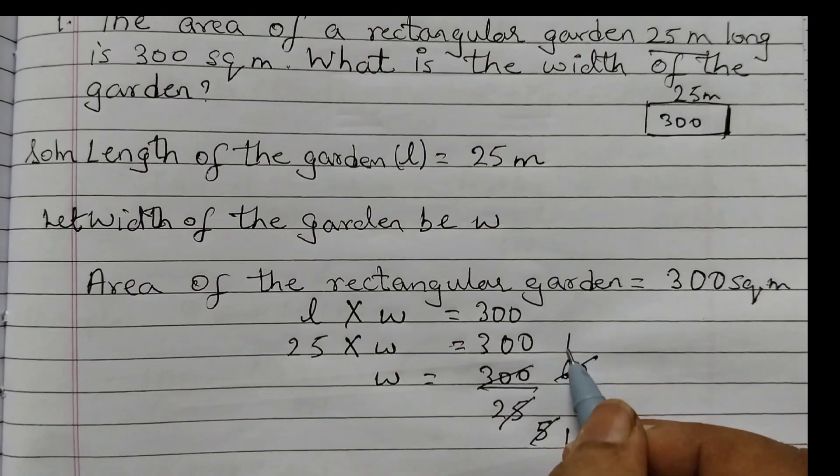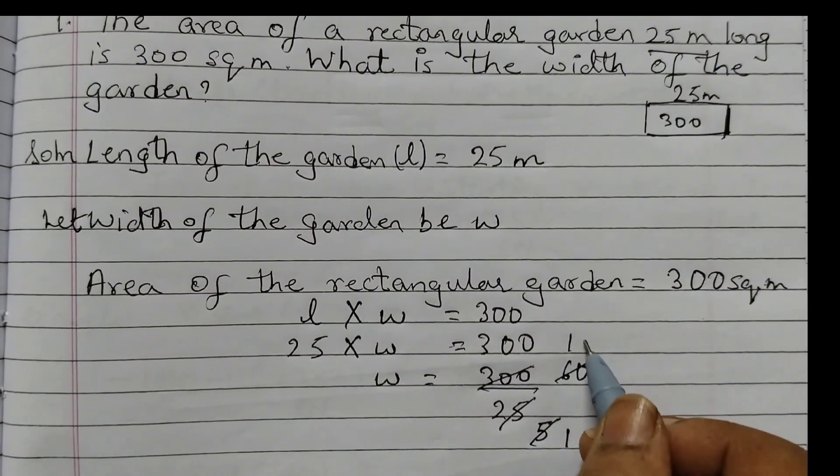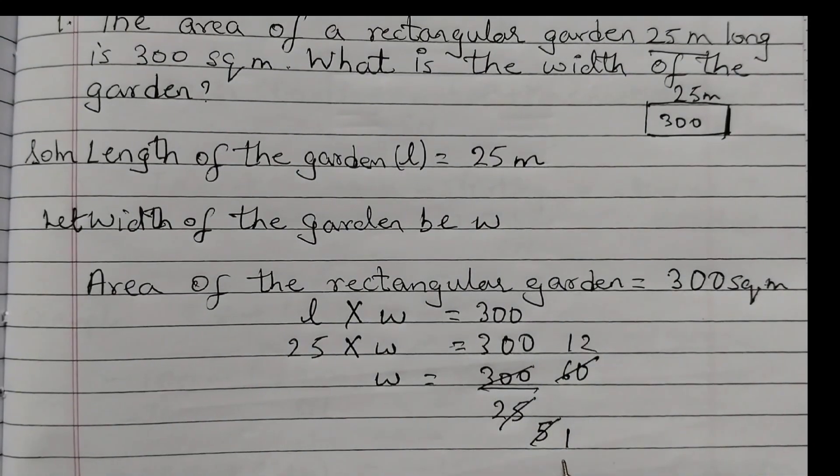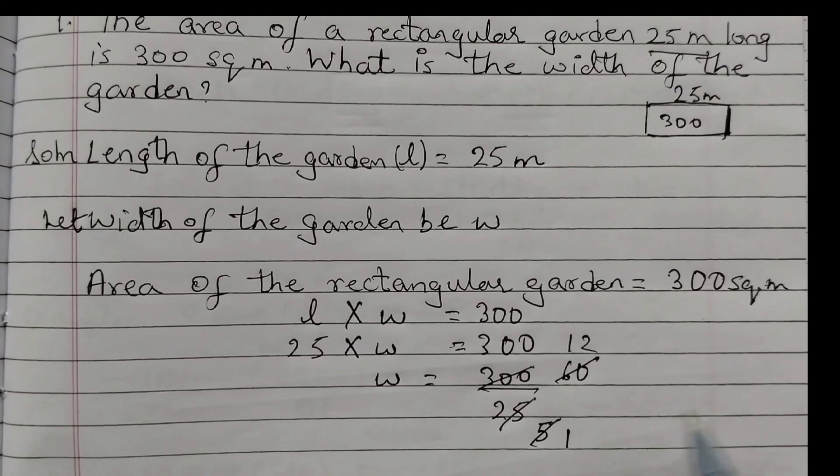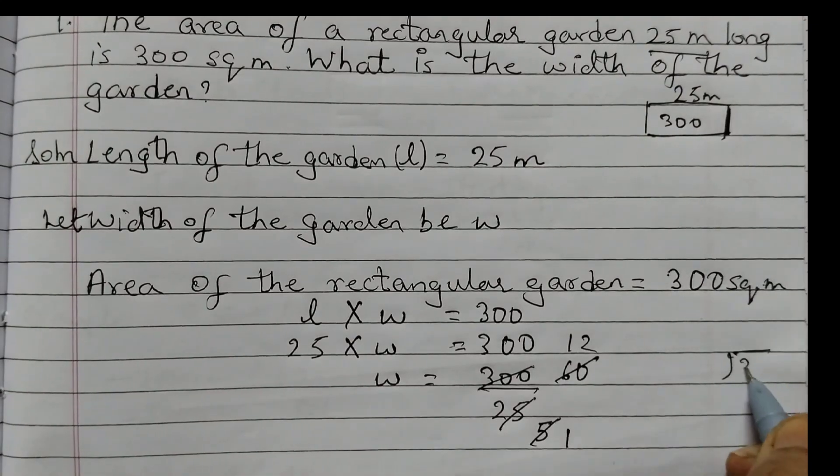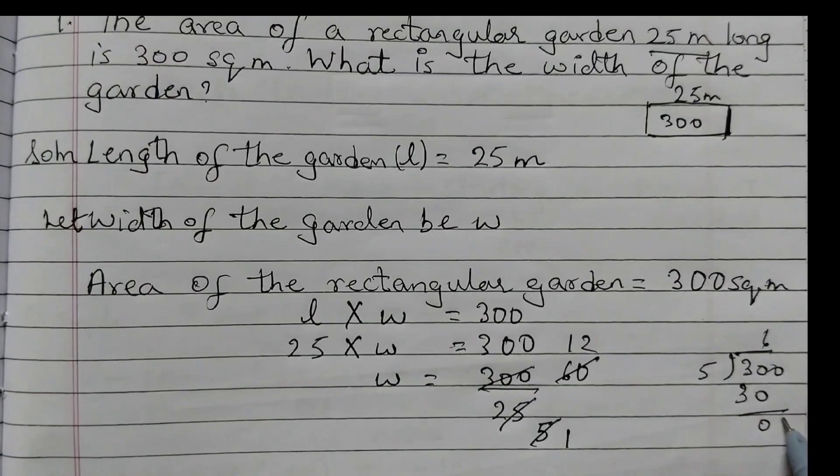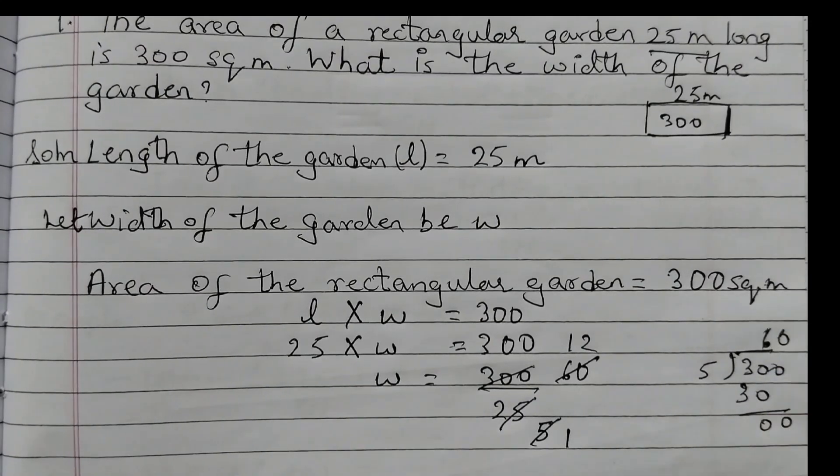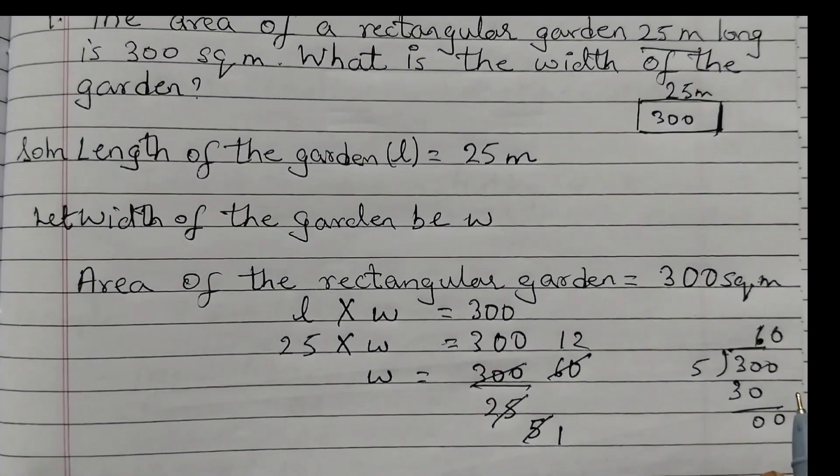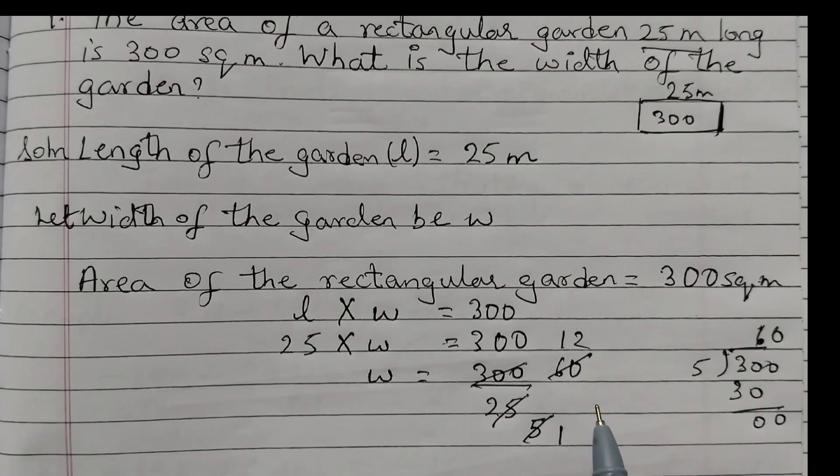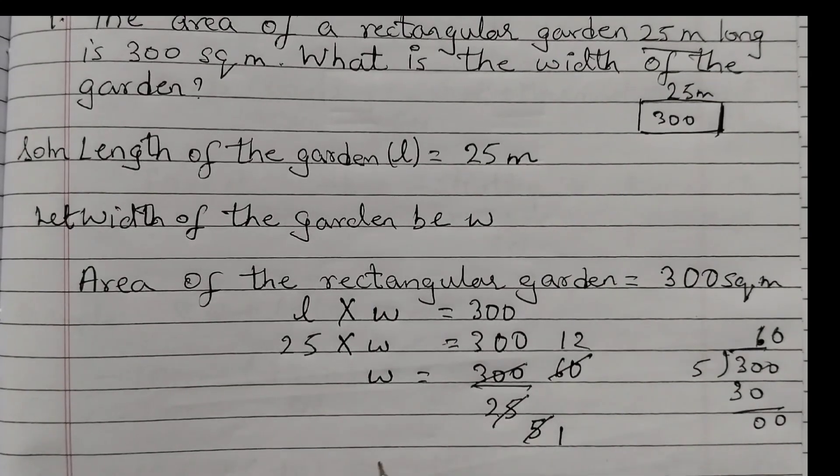If you cannot do division like this, we can do division like this: 300, you can take, divide by 5. 5 sixes are 30, 0 and then 0 here, so 60. Then again the same way you will take 60 and divide by 5, right? So the answer here is the width is equal to 12 meters.